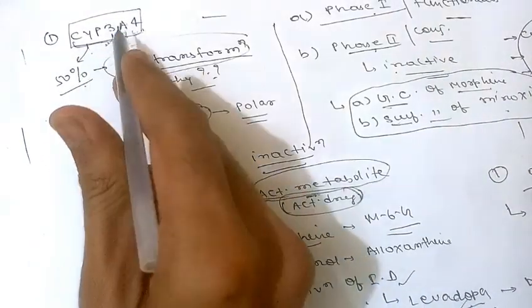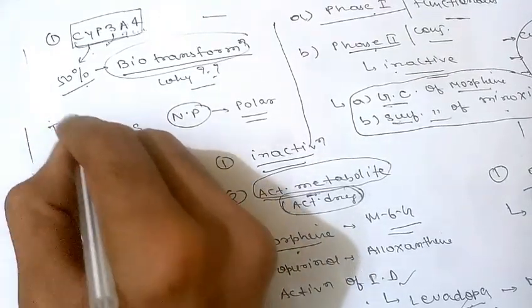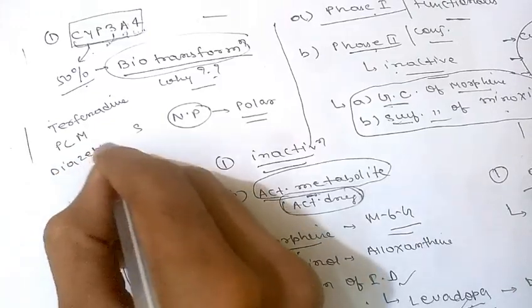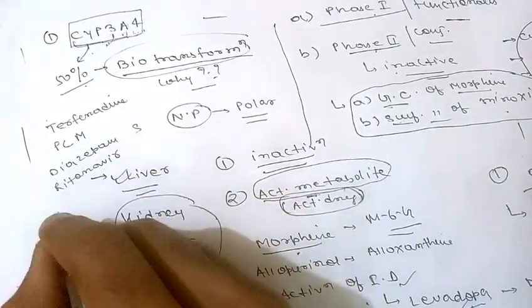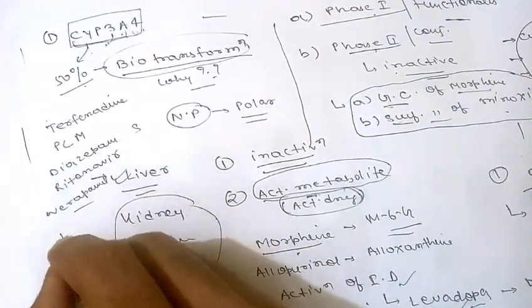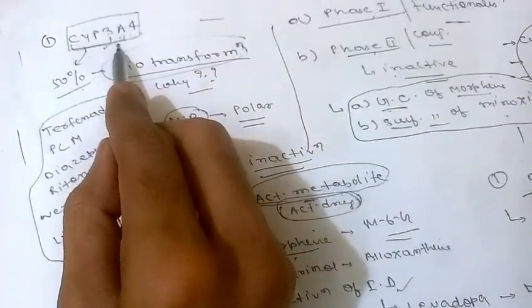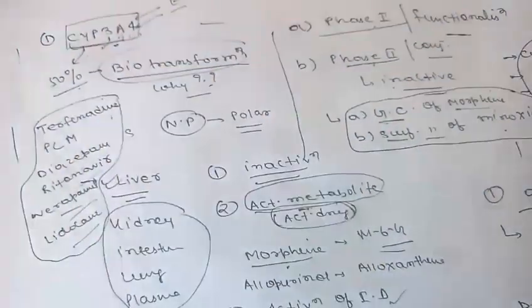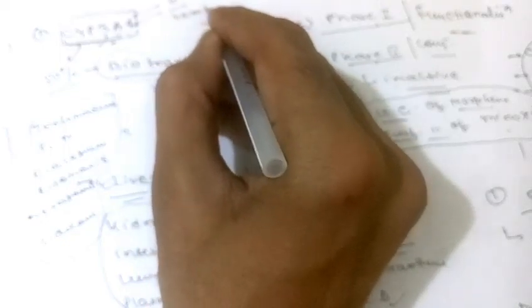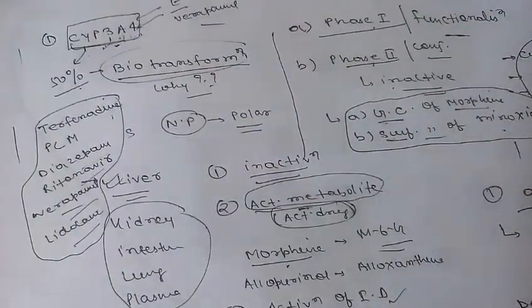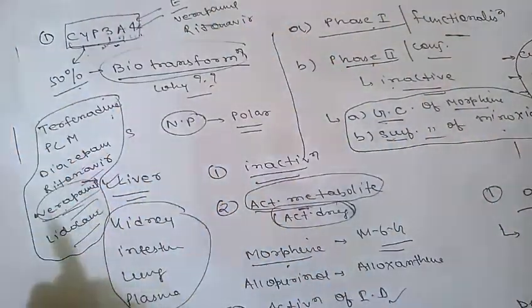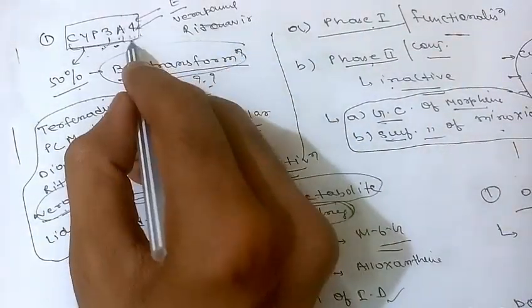Drugs metabolized by CYP3A4 include terfenadine, paracetamol, diazepam, warfarin, verapamil, and lidocaine. Inhibitors of CYP3A4 include erythromycin, verapamil (which is both a substrate and inhibitor), ritonavir, and grapefruit juice. Notably, verapamil is both metabolized by and is an inhibitor of this isoenzyme.